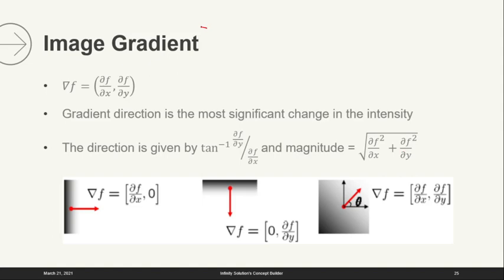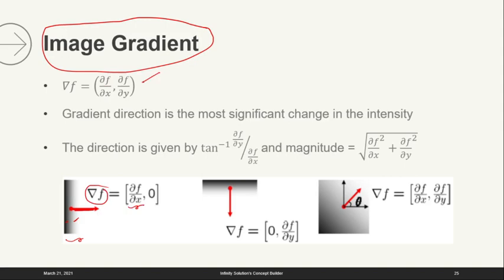The gradient of a function f is defined as the vector of its partial derivatives with respect to x and with respect to y. The gradient definition is: the direction of most significant change in intensity — which is exactly the edge we want. So we don't have to apply the Sobel or Prewitt filter every time to get edges in horizontal, vertical, and diagonal directions separately. The image gradient is very useful in finding edges.